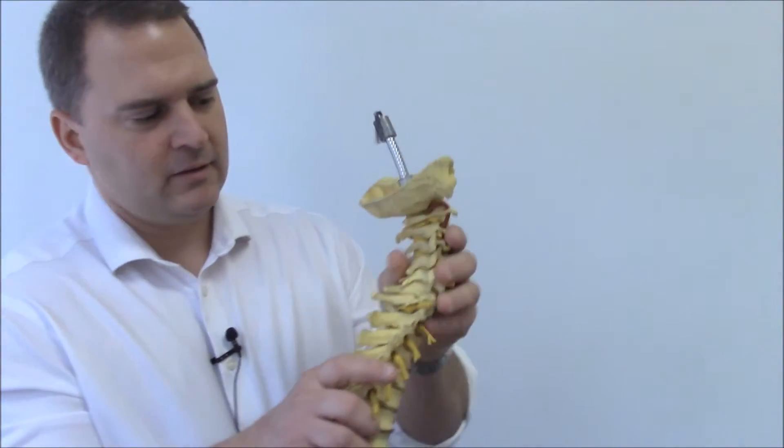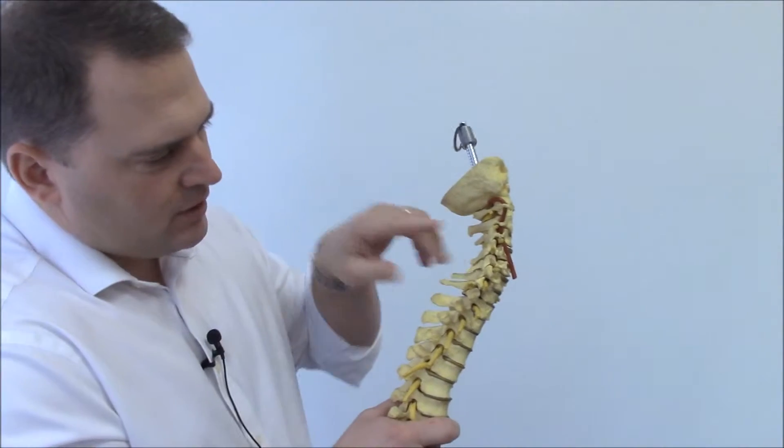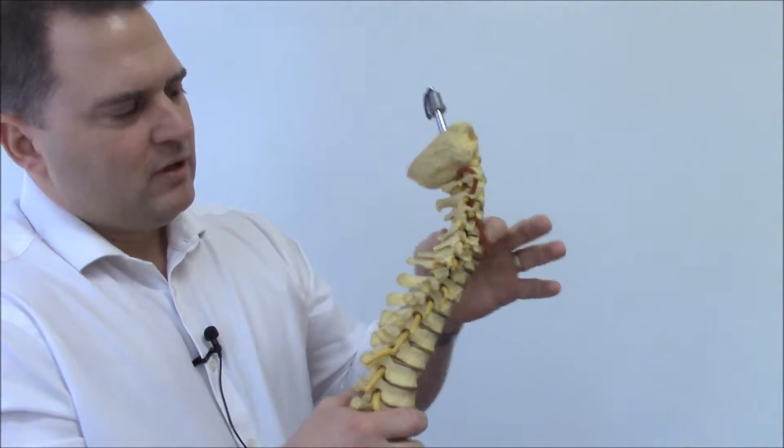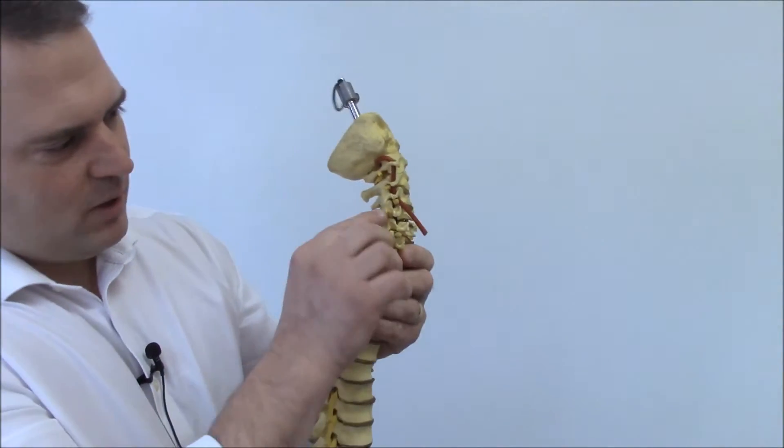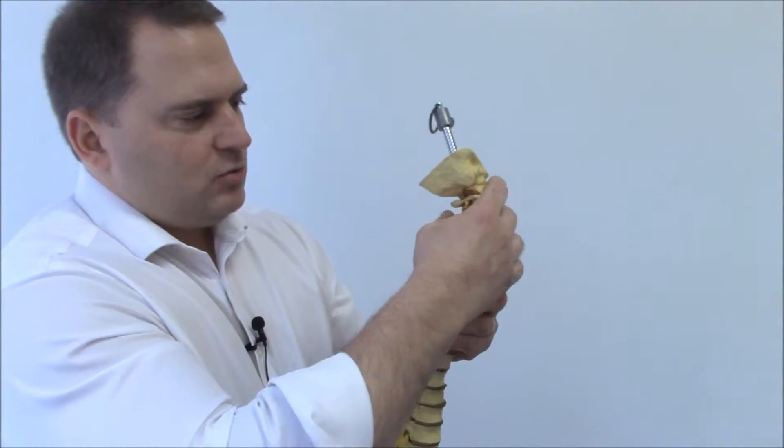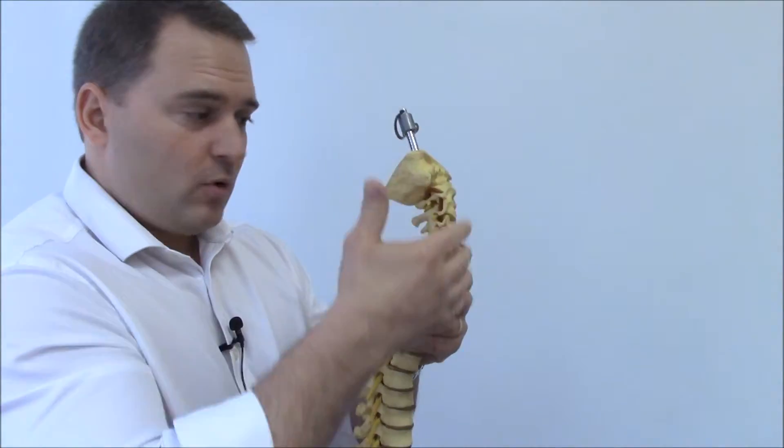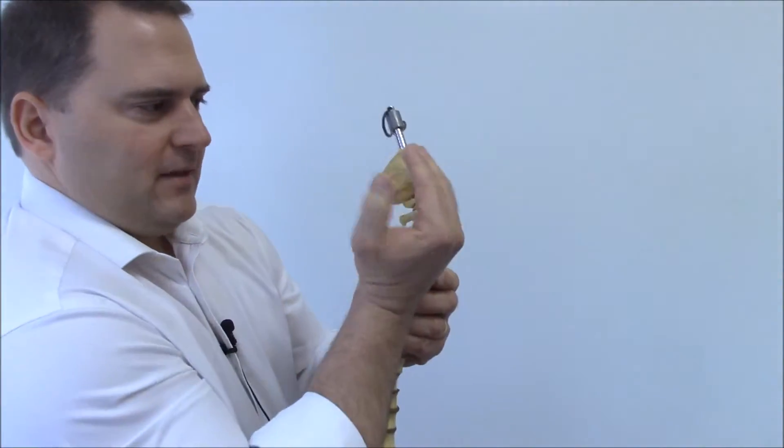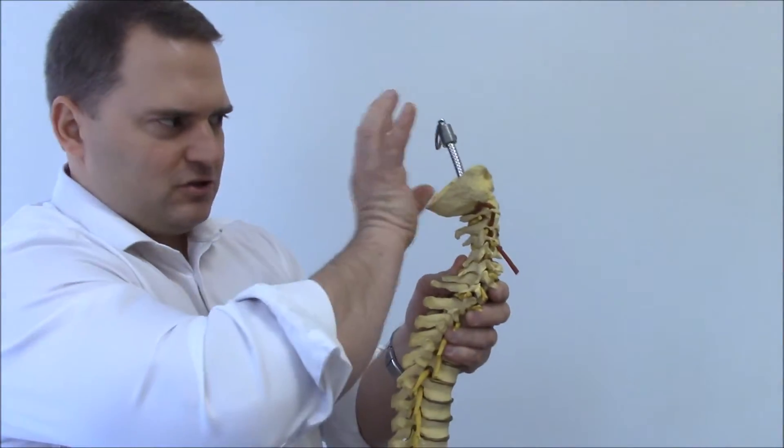This is a normal cervical spine and what makes it normal is it's in a C-shaped curve. These little joints in the back of the spine are angled at about a 45 degree angle and it creates what's called a lordosis or a forward-facing curve. This would be the face out here and this is the back of the head.